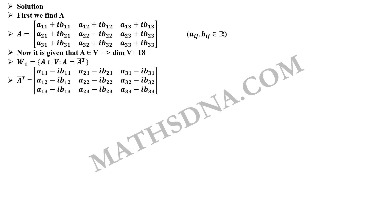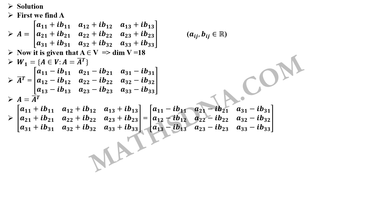Now, for W1, we put A equals to A complement transpose that gives us that A11 plus iB11 should be equals to A11 minus iB11 which implies that B11 equals to 0, an element on the diagonal. Similarly, the B22 and B33 will also be equals to 0.